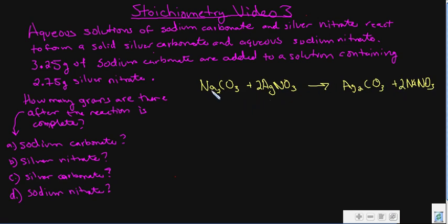Now we balance. On the left we had two sodiums, but the sodium nitrate product only has one, so we put a 2 in front of NaNO₃. That makes two nitrates on the right, which means we also need a 2 in front of AgNO₃ on the left to match the two silvers in Ag₂CO₃. The equation is now balanced: one molecule of Na₂CO₃ and two of AgNO₃ make one Ag₂CO₃ and two NaNO₃.